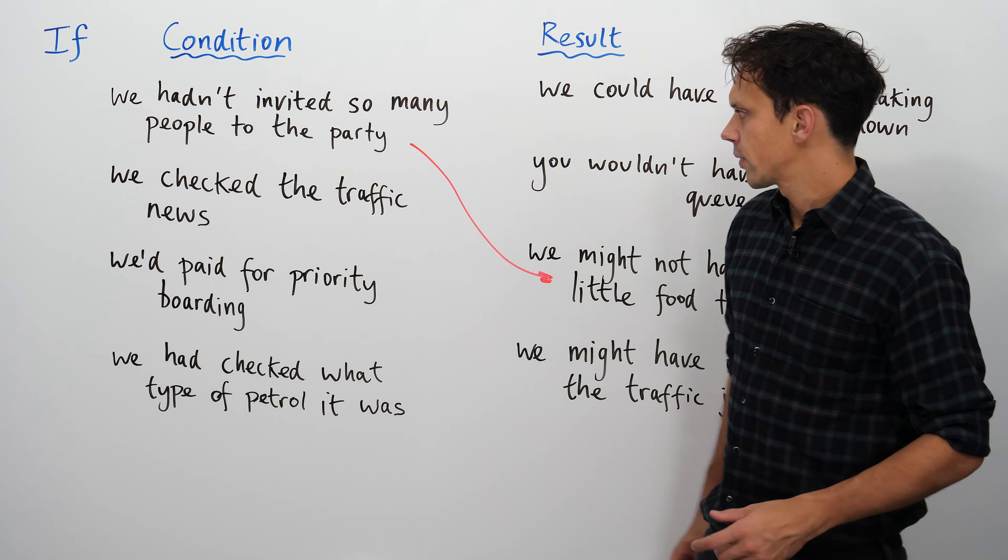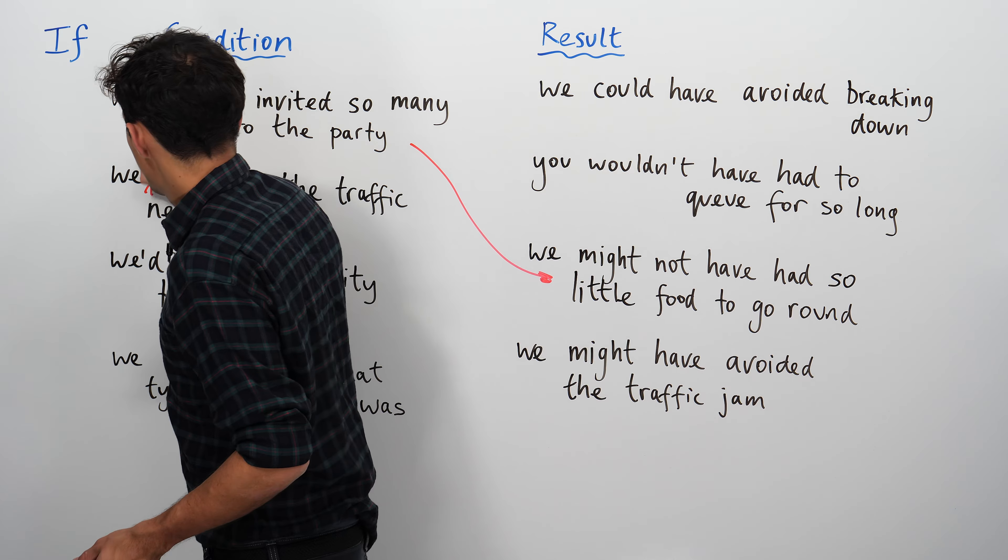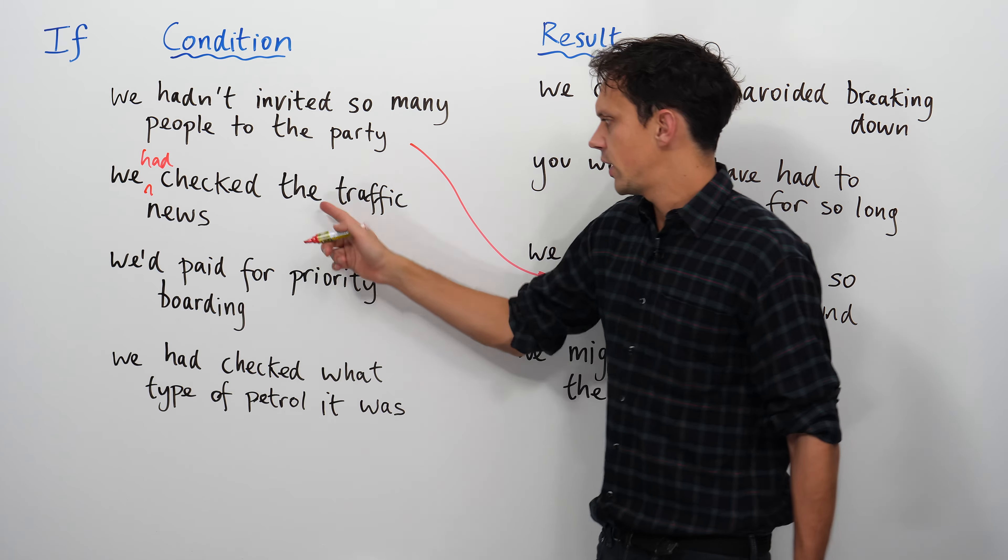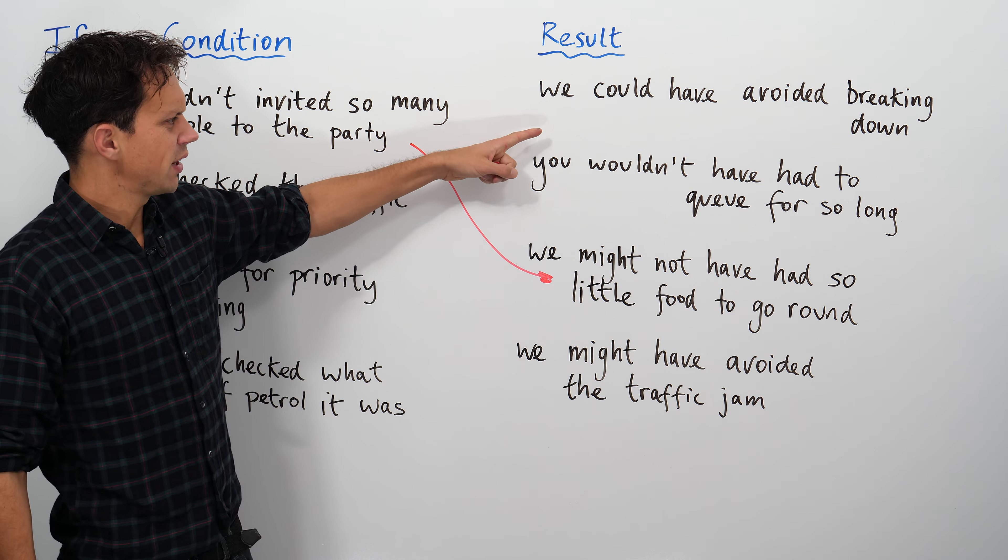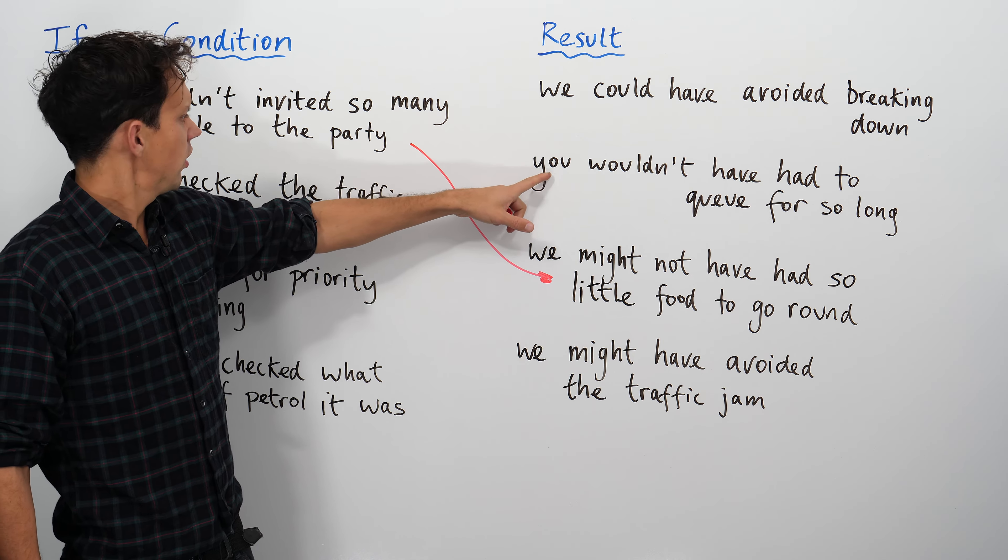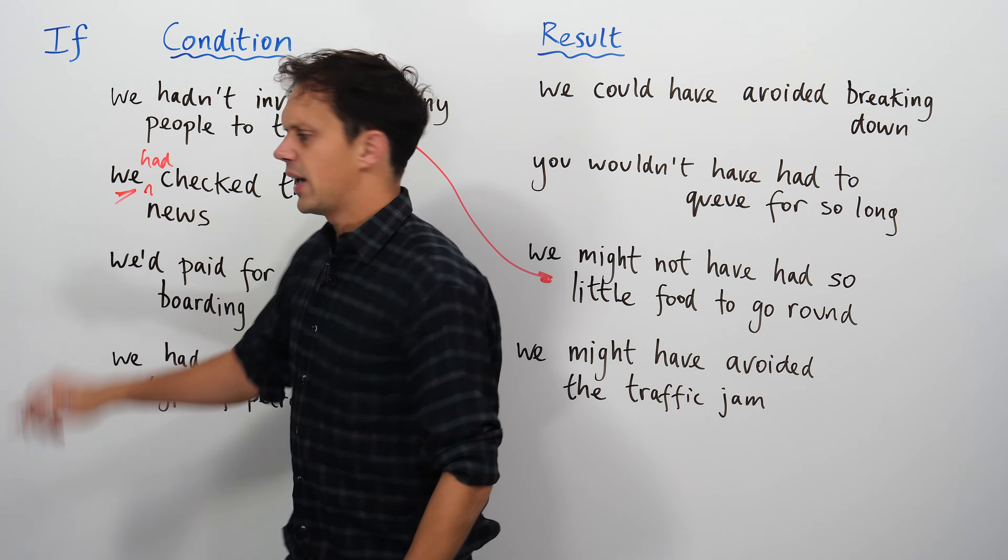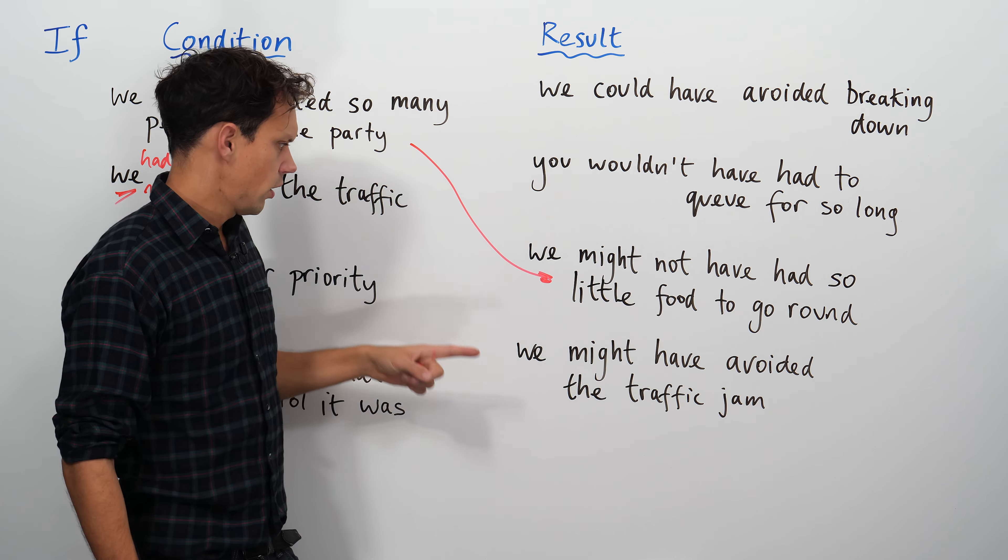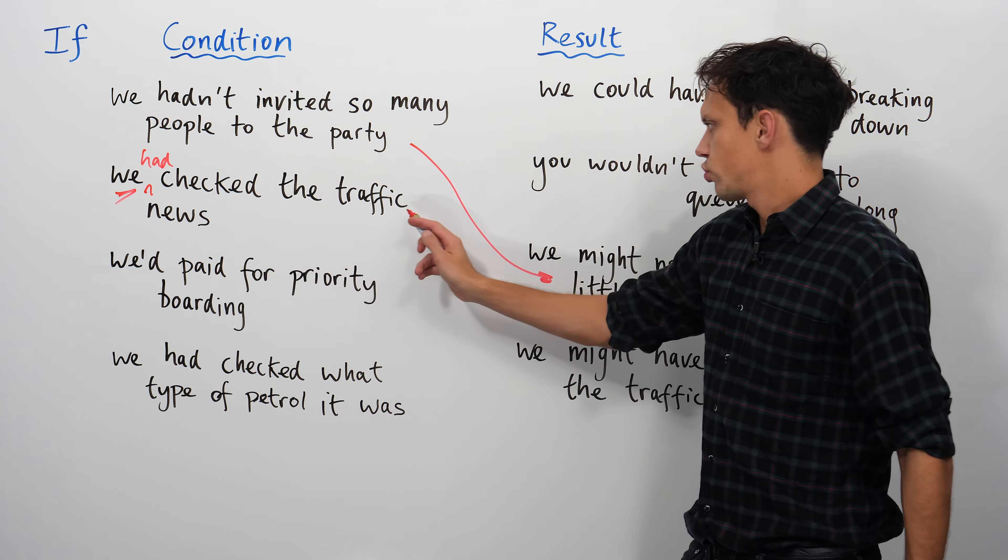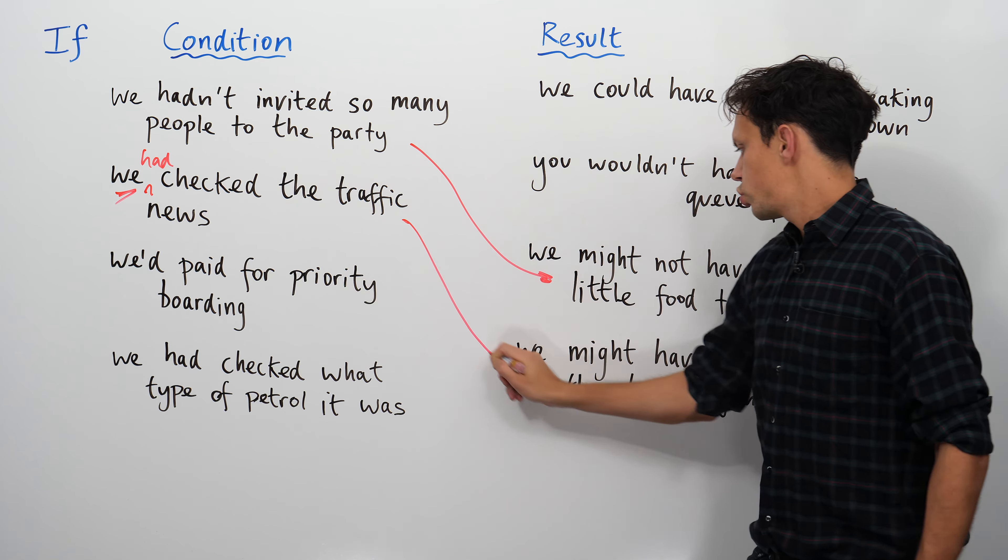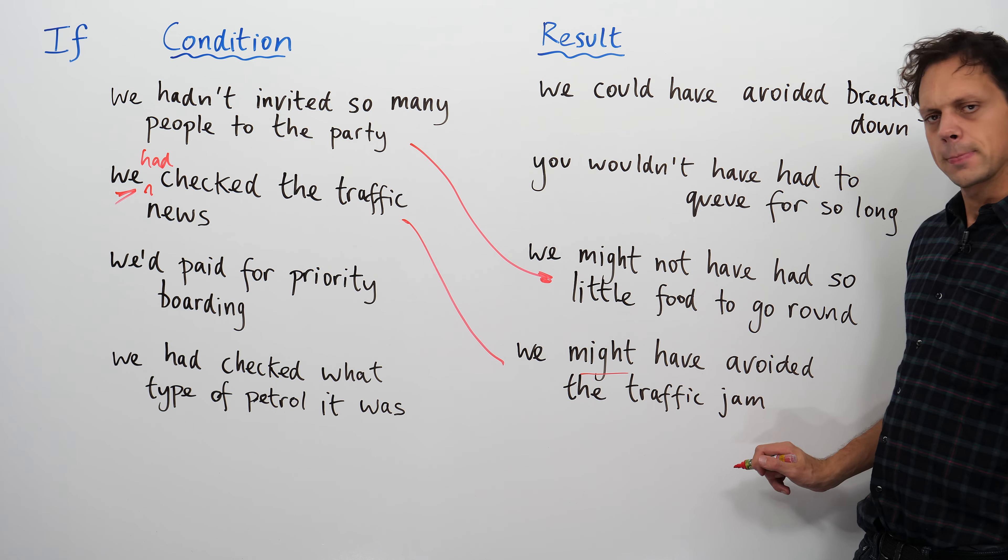If we had checked the traffic news, how would the past have been different? We could have avoided breaking down. You wouldn't have... So we've got a different subject here, so that's not going to work, is it? Because look, we've got we here, so that's not it. We might have avoided the traffic jam. If we had checked the traffic news... Modal. We might have avoided the traffic jam.